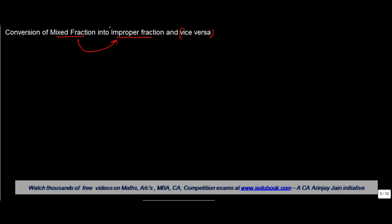Let us see how to convert a mixed fraction into an improper fraction and vice versa — that is, mixed fraction into improper fraction and improper fraction into mixed fraction. First, let us say you have a mixed fraction which is 4 and 7 upon 9, and you have to convert this into an improper fraction.